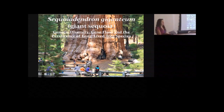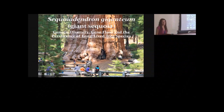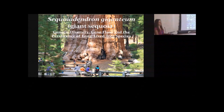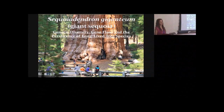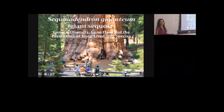My presentation can't necessarily clarify anything about Coast Redwood, so I'm going to be talking about giant sequoia, in which there is no basal sprouting — no asexual reproduction. So right off the bat, that's a big difference between the two taxa.